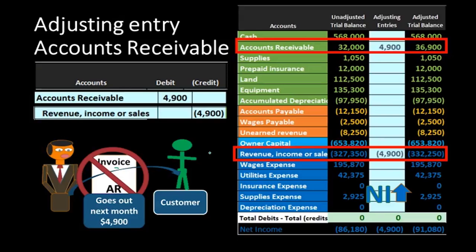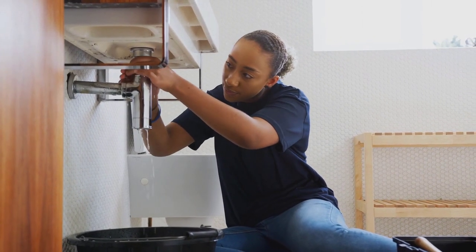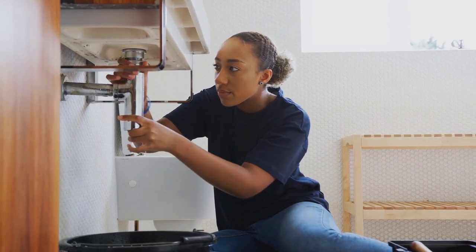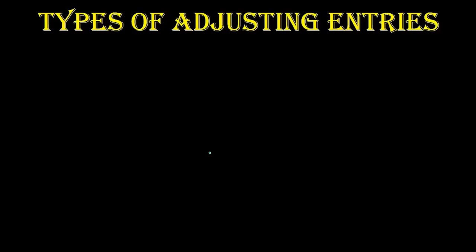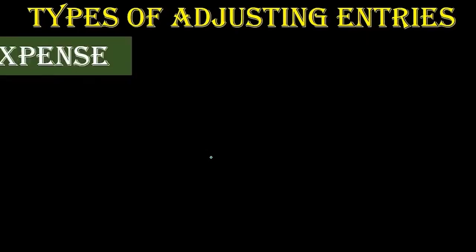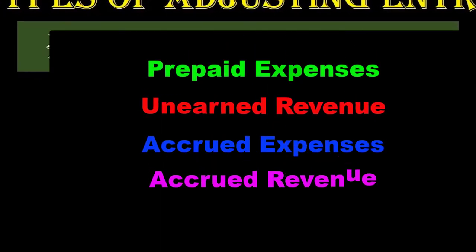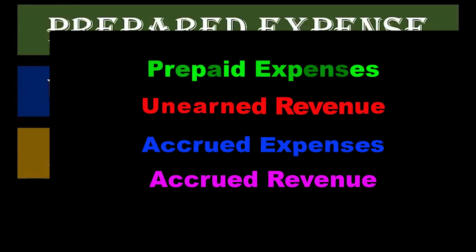You might be thinking this could cause a double-recording problem later on. Right now, we're just trying to get the financial statements correct on an accrual basis. We'll talk about how to fix the tension between the adjusting process and the normal accounting process later. So the types of adjusting journal entries include prepaid expense, unearned revenue, accrued expenses, and accrued revenue.